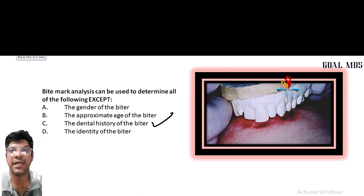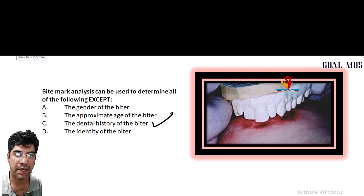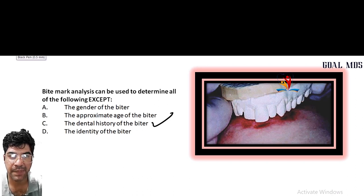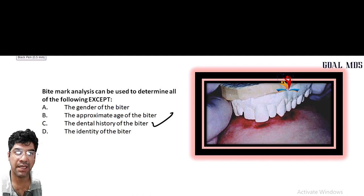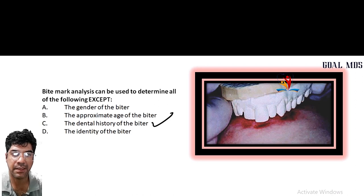Second is the approximate age of the biter — one can identify age by the development and wear pattern of teeth and their eruption pattern. Third is the dental history of the biter — dental history cannot be identified through bite mark analysis.